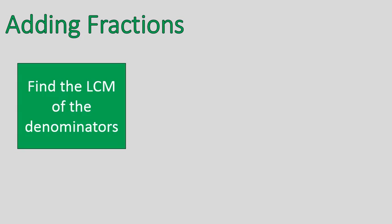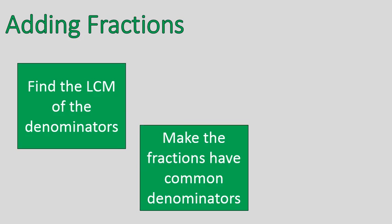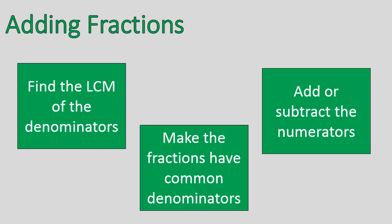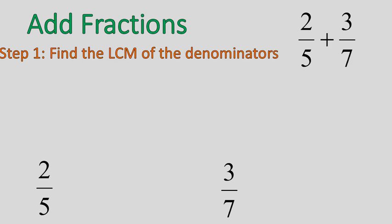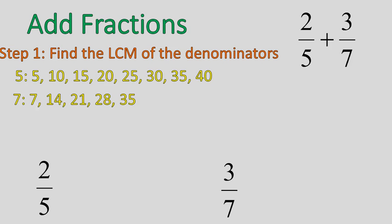Here are the steps we're going to follow: find the lowest common multiple of the denominators, or the LCM; make the two fractions have a common denominator; then add or subtract the numerators. So here's our question: 2 fifths plus 3 sevenths. I need to find the lowest common multiple of the denominators. I list the multiples of 5 and some multiples of 7, and identify the least common multiple — the lowest number in both lists. In this case, it's 35.